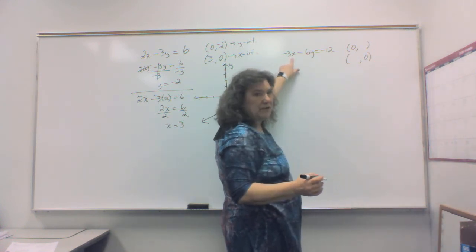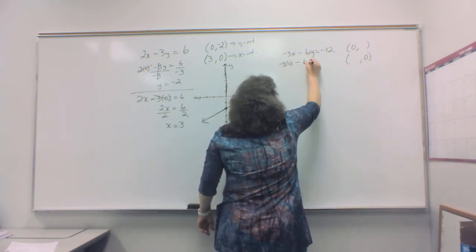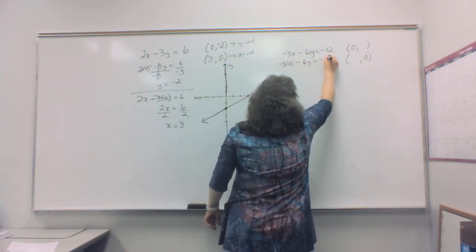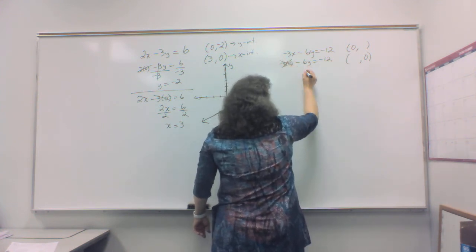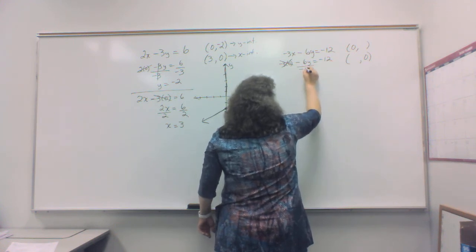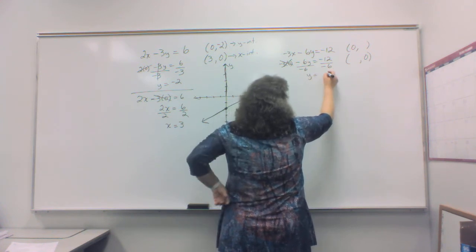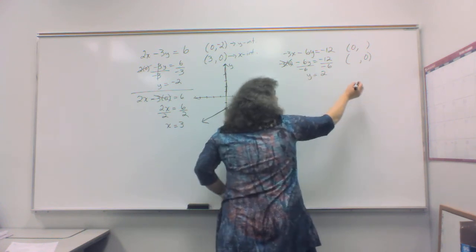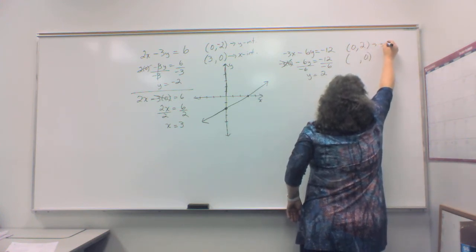Put zero in for the x. So I have negative 3 times zero minus 6y equals negative 12. This is zero. So I'm left with a negative 6y equals negative 12 divided by negative 6. And I end up with y is equal to the number 2. Therefore, 0, 2 gives me my y intercept.